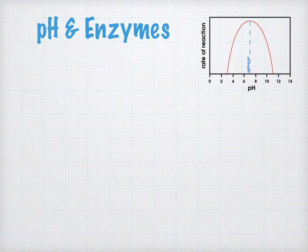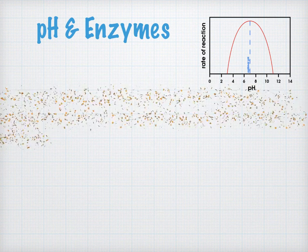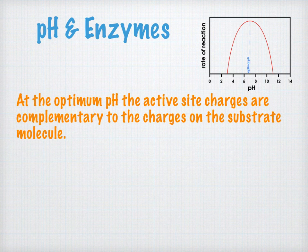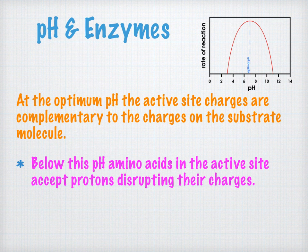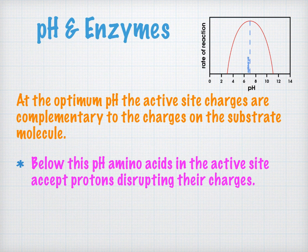A second factor which affects the rate of enzyme-controlled reactions is the pH of the environment. At the optimum pH, there's the fastest rate of reaction, because the charges in the active site are completely complementary to the charges found on the substrate molecule. Below this pH, in acidic environments, the amino acids will start to accept protons onto the amino groups in their structure, disrupting the charges and causing the active site to become more positive and no longer complementary to the substrate.